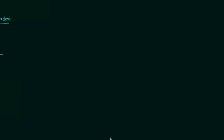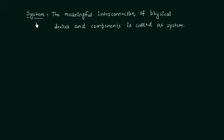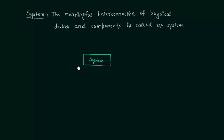Now I will explain what we mean by a system. The meaningful interconnection of physical devices and components is called a system. Let's represent this system by a rectangular box. A system alone cannot achieve anything.